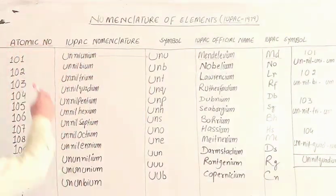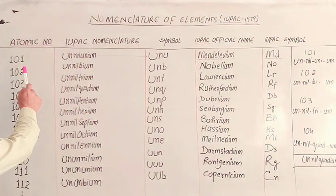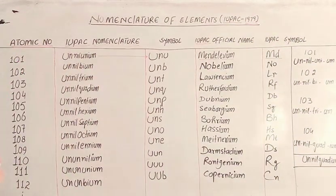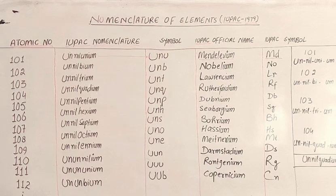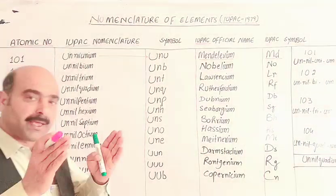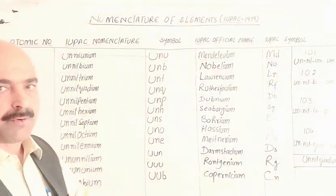It will be a topic that counts — the atomic numbers and the periodic table. The atomic number starts at 101 in this discussion.